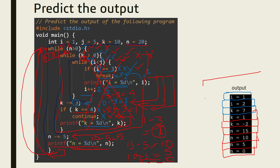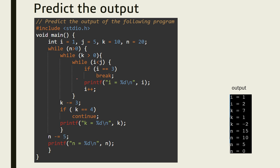This is how we get the series of outputs for i, k, and n. Keep in mind: when the break statement is executed, it comes out of that particular loop in which it is executed. When a continue statement is executed, it continues with the next iteration of that particular loop — everything written after the continue statement is skipped and it goes back to checking the condition in the same while loop. These two things are very important.